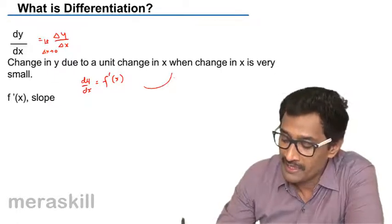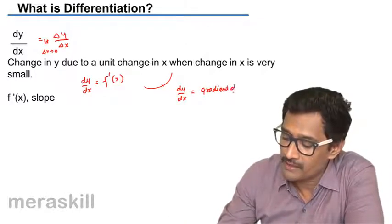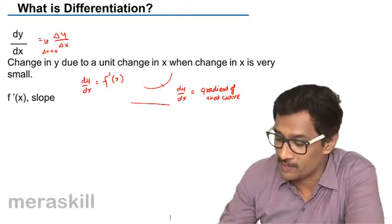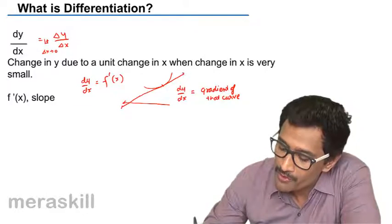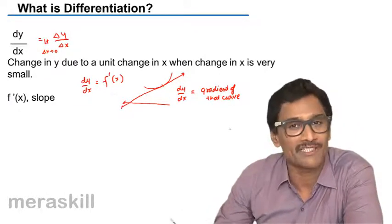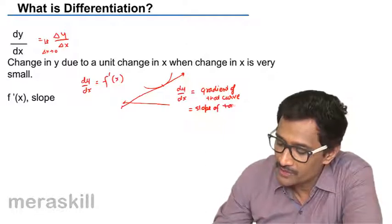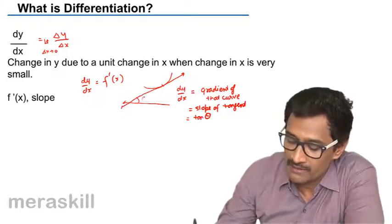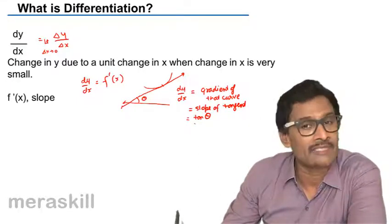The gradient of the curve means what kind of angle the curve makes with the horizontal. Since a curve cannot make a fixed angle everywhere, the gradient of the curve is actually the slope of the tangent drawn to the curve at that particular point. The slope of the tangent is tan of that particular angle, and it can also be calculated as (y₂ - y₁) / (x₂ - x₁).